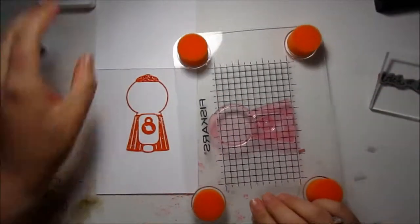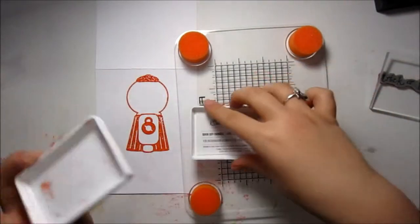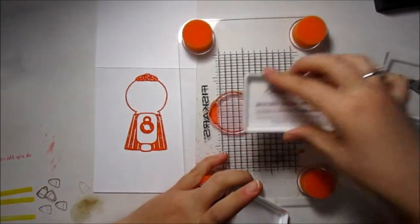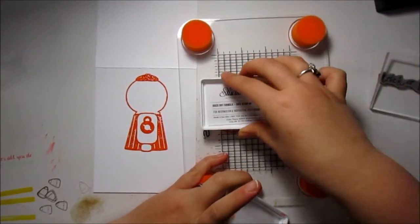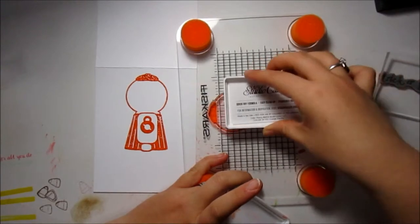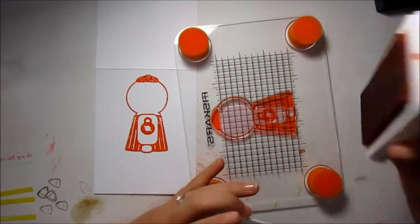Once I have that stamped once, I'm going to ink it up with the same ink again and I'll stamp it down right on top. I want it to be kind of like a dark autumny orange rather than like a bright orange.